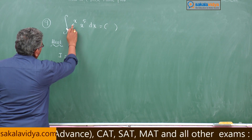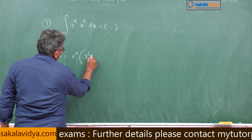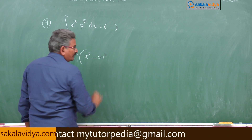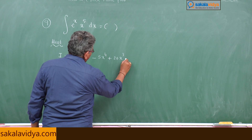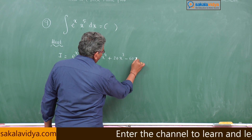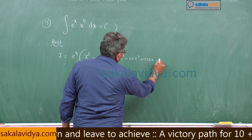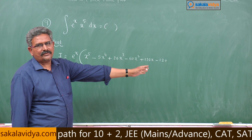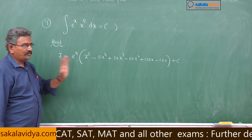The required answer I equals e^x times: open bracket x^5, minus 5x^4, plus 20x^3, minus 60x^2, plus 120x, minus 120, close bracket. The sign alternates, and each term is the successive derivative of x^5. This is the answer.